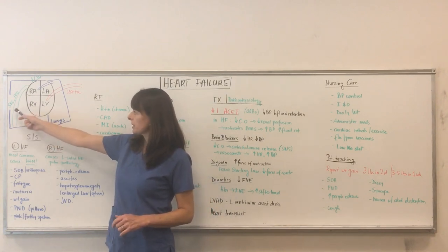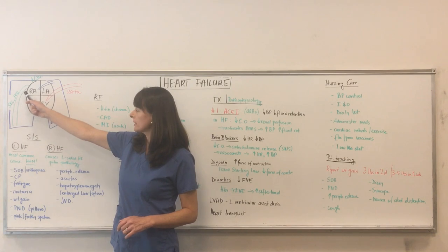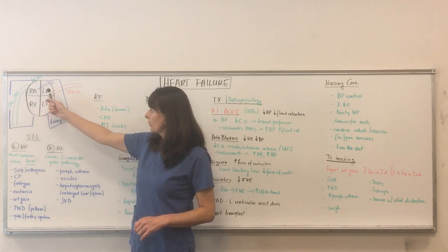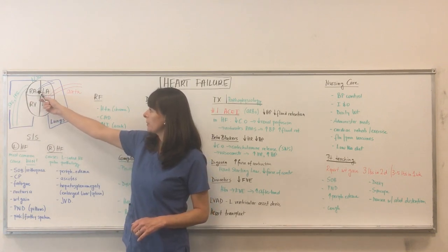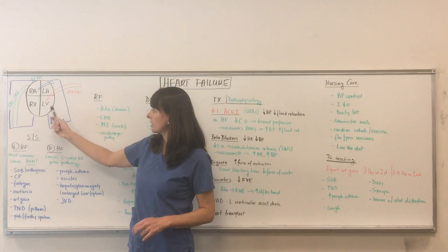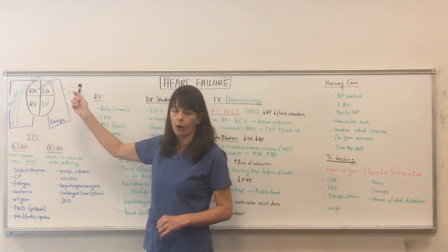We have the superior and inferior vena cava bringing the blood back to the heart. We have the pulmonary vasculature going to the lungs and then the aorta leaving the heart.